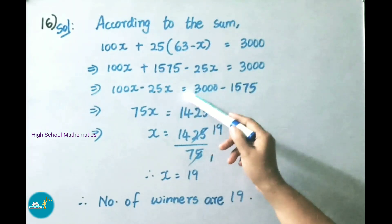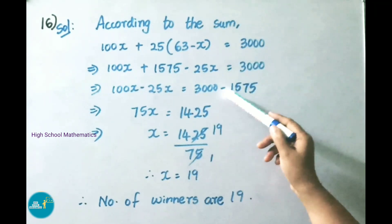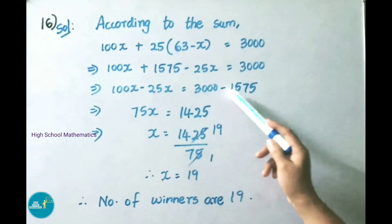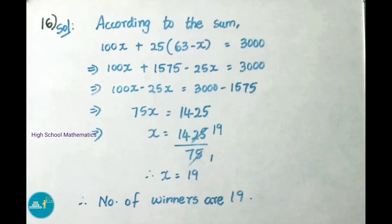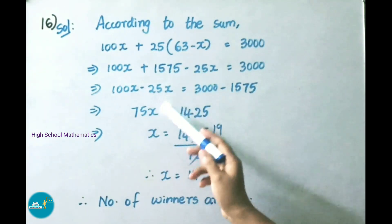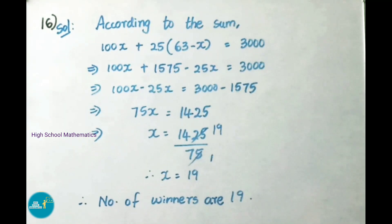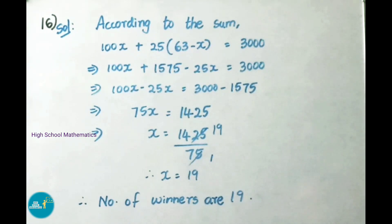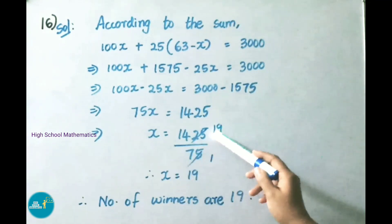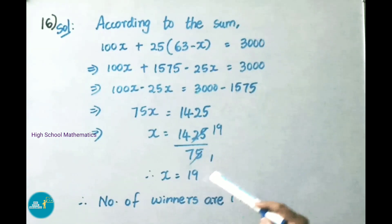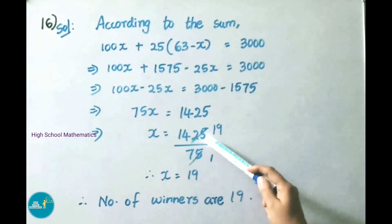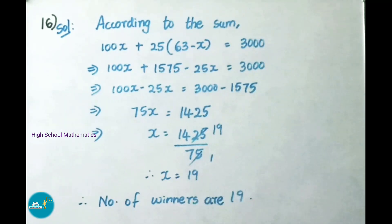75x equals 1425. Therefore x equals 1425 divided by 75. 75 times 19 equals 1425. Therefore x value is 19. Therefore the number of winners is 19.